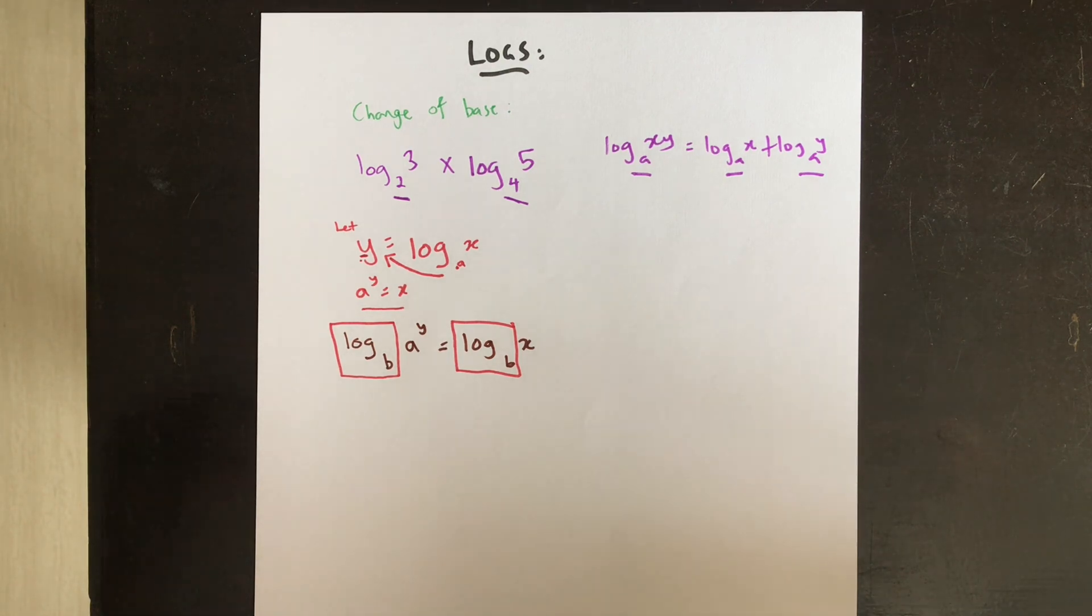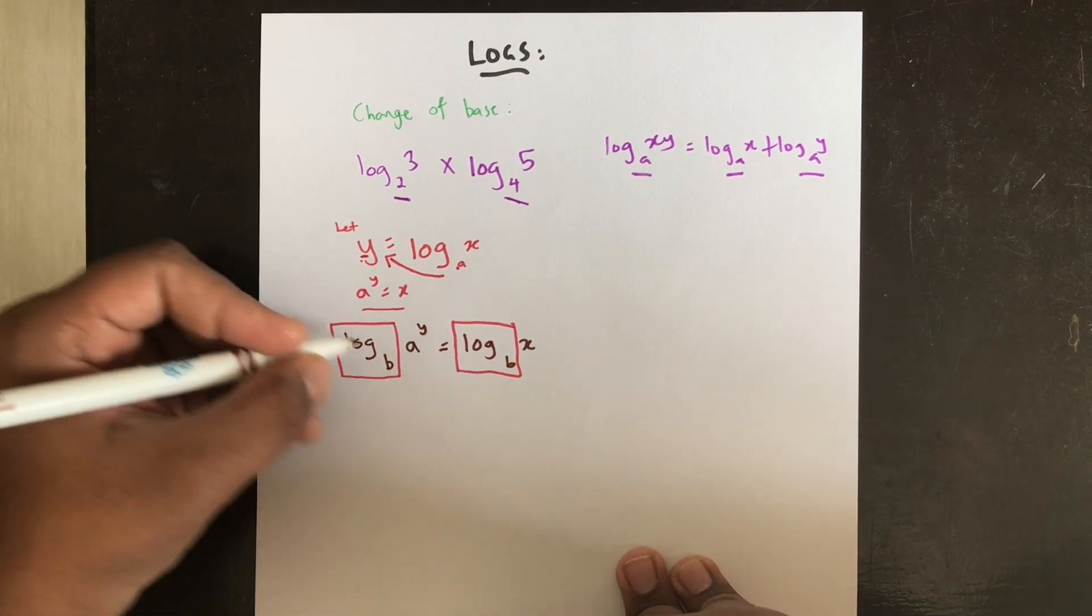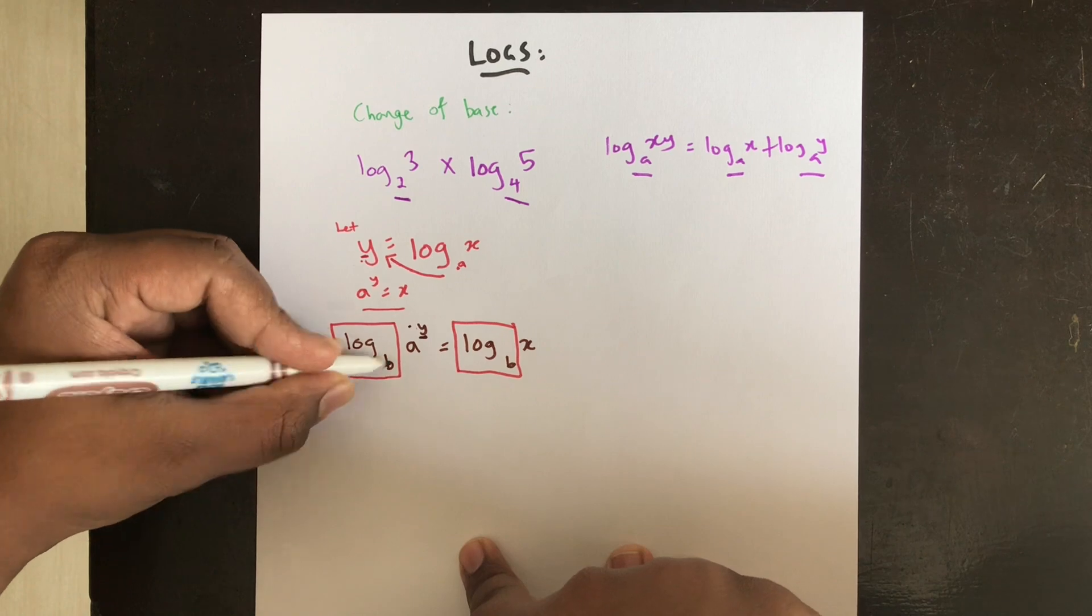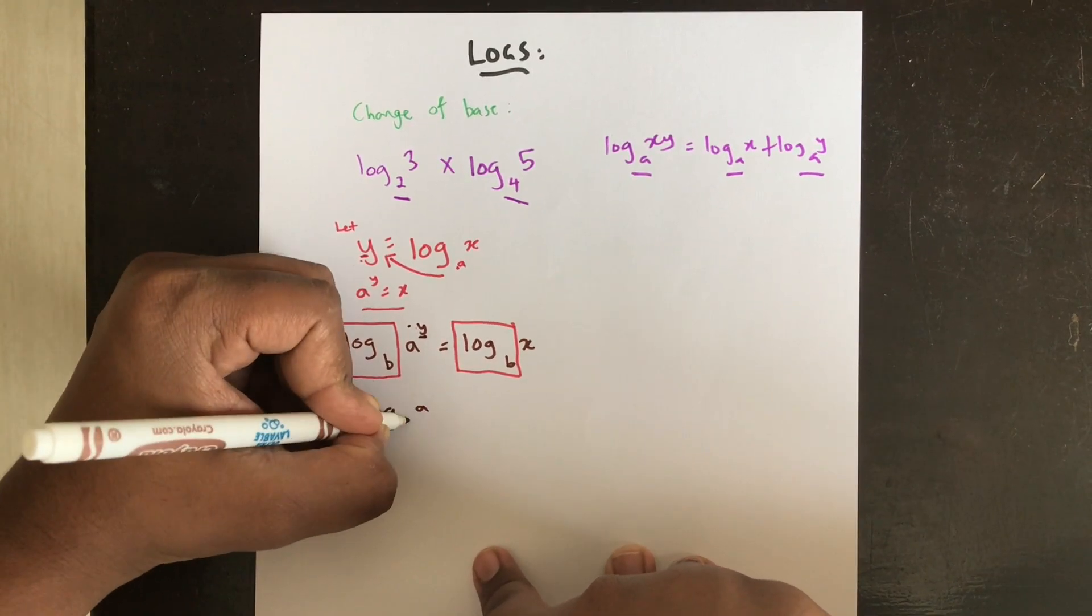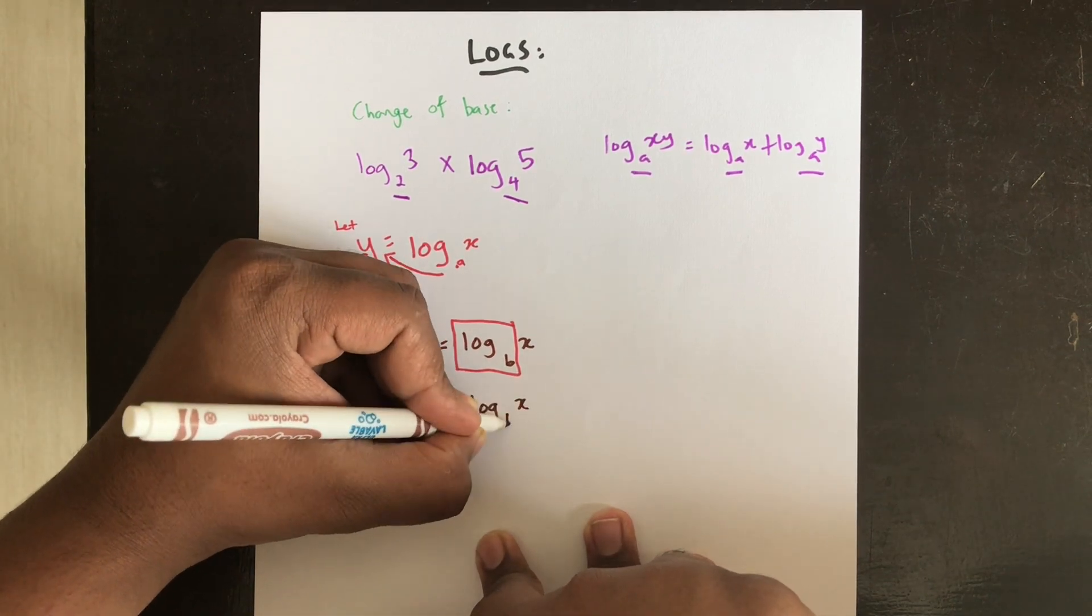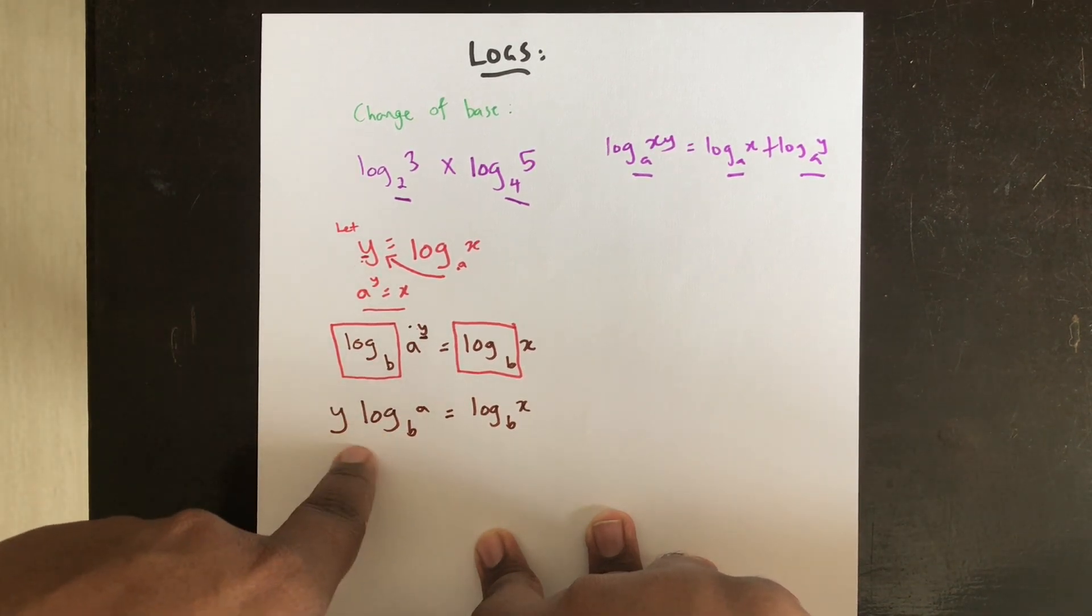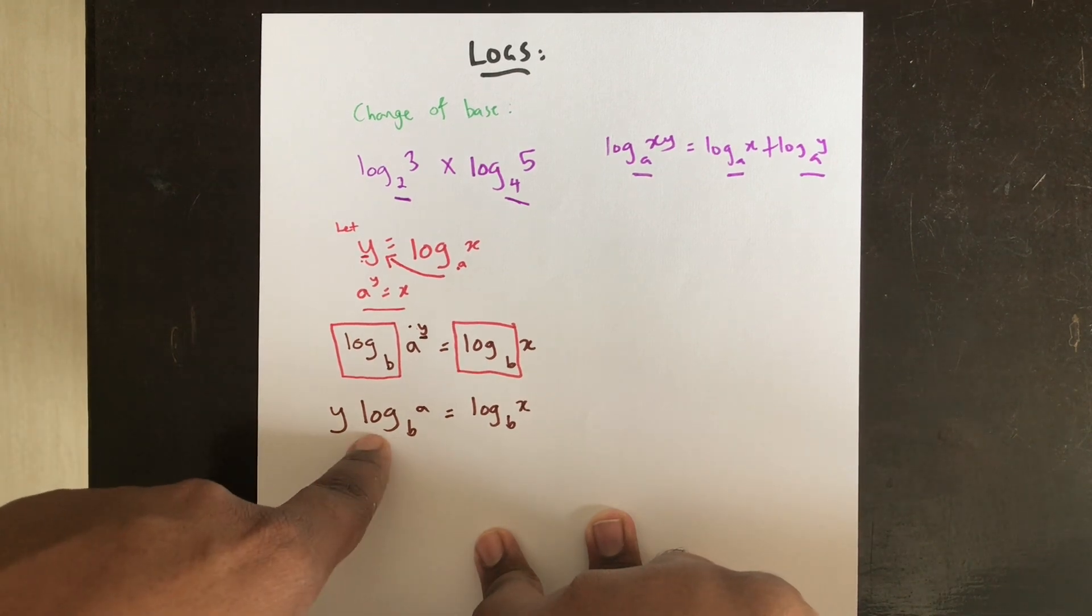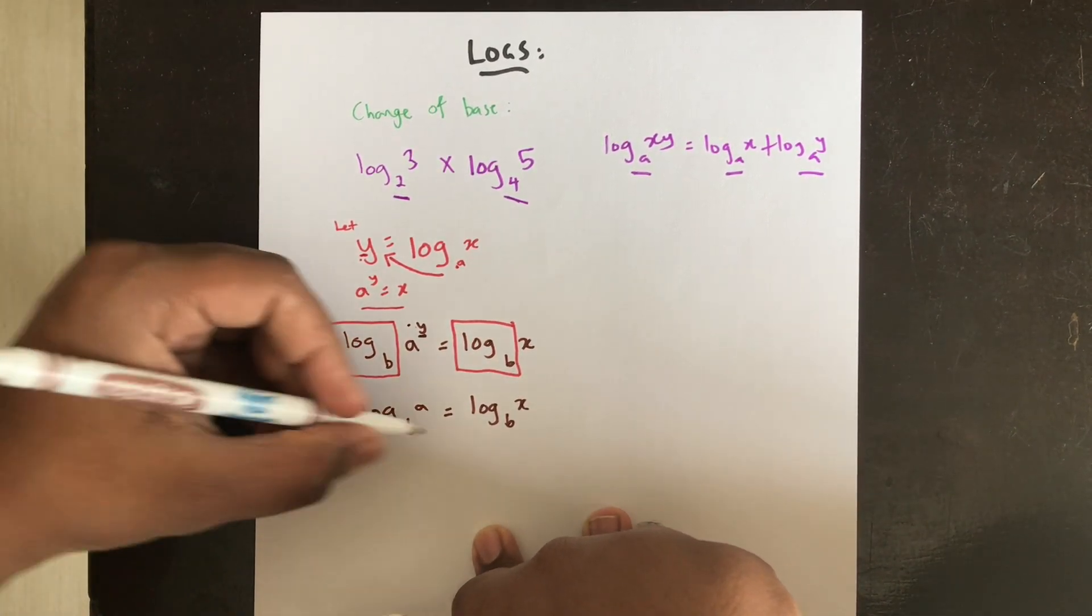Another rule which we had learned is if I have log a to the power of y base b, this power can actually come down. So this is the same as y log a base b is equal to log x base b. If you are a bit confused now, you can have a look at the previous videos regarding the rules of logarithms so that this doubt of yours can be cleared.